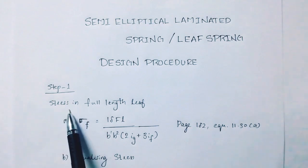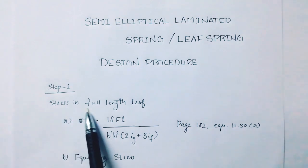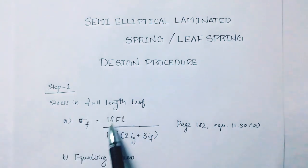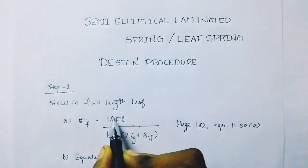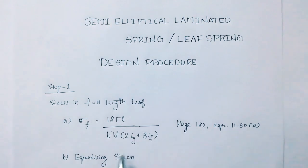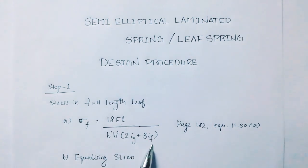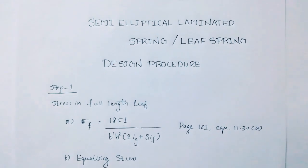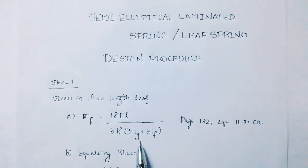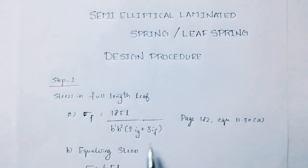Step 1 is to find stress in full-length leaf. The equation for stress sigma f equals 18fl divided by b'h-squared into (2ig plus 3if). This is page number 812, equation 11.30a.